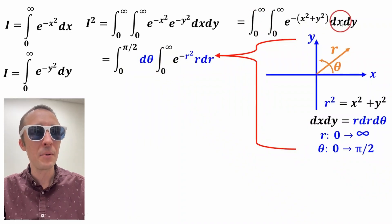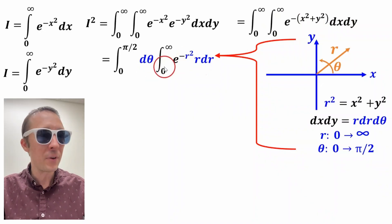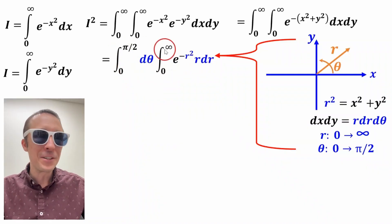So instead of a double integral with x and y, we have a double integral with theta. Theta can separate from the r. And theta is going from zero to pi over two. r is going from zero to infinity.